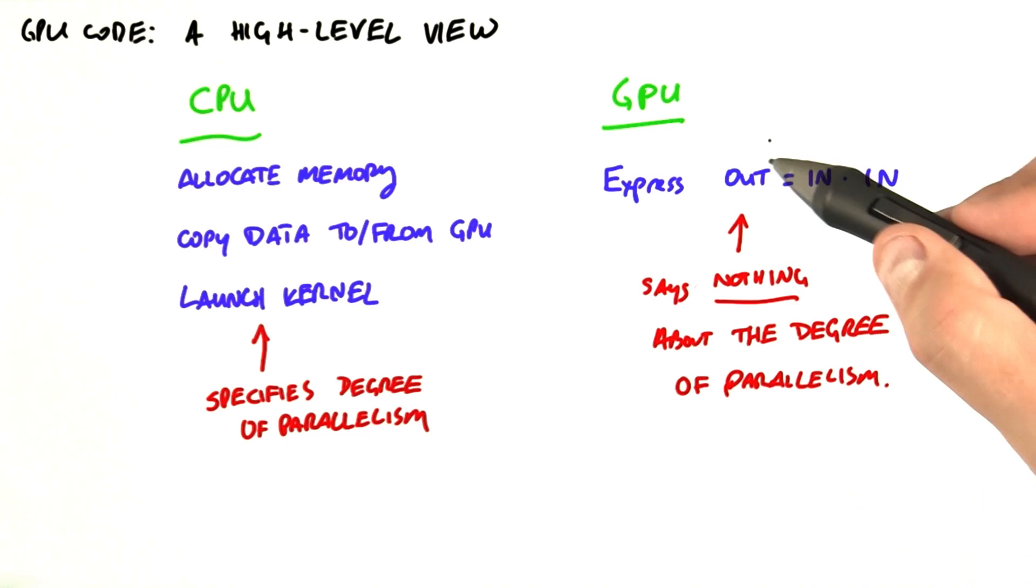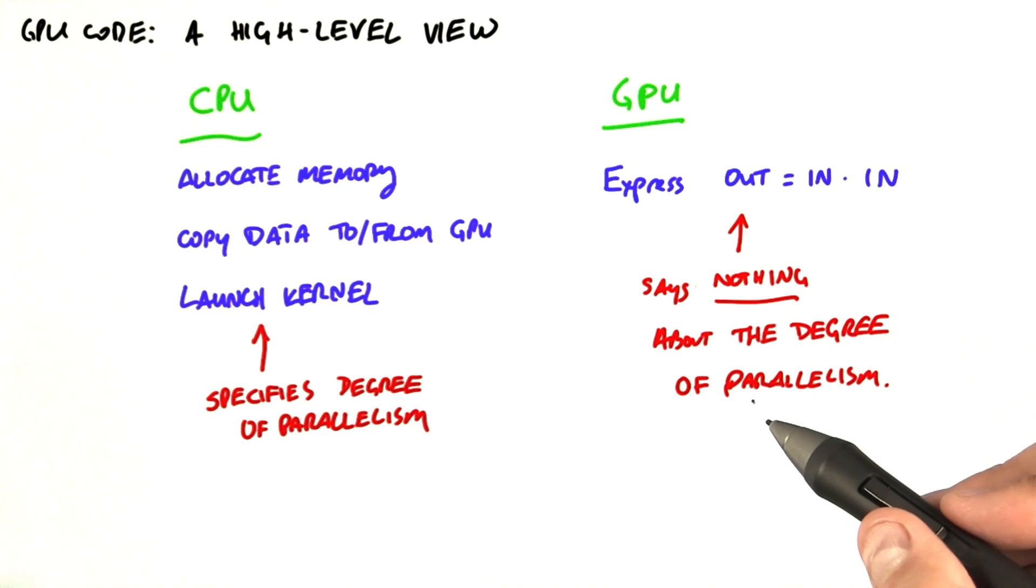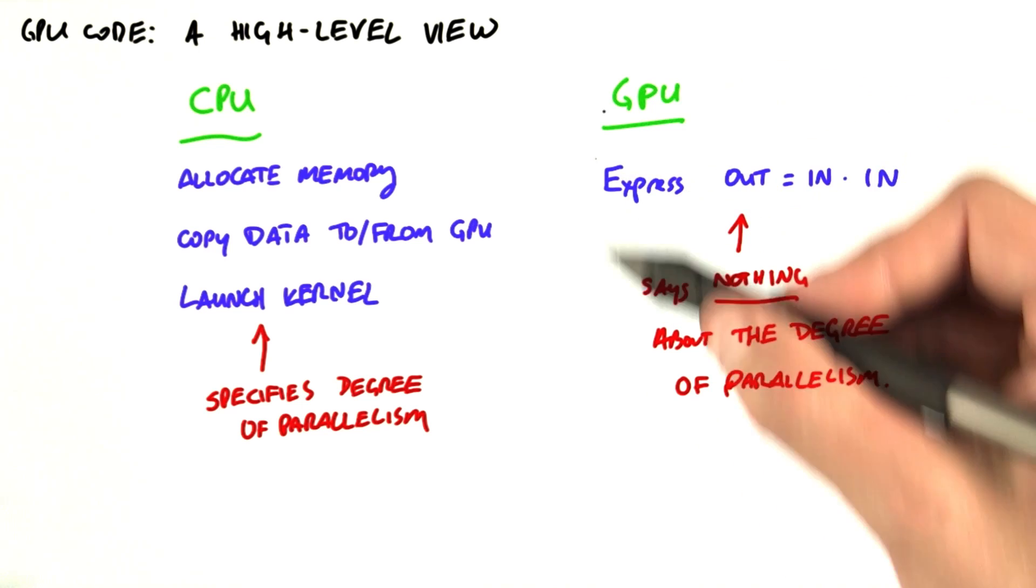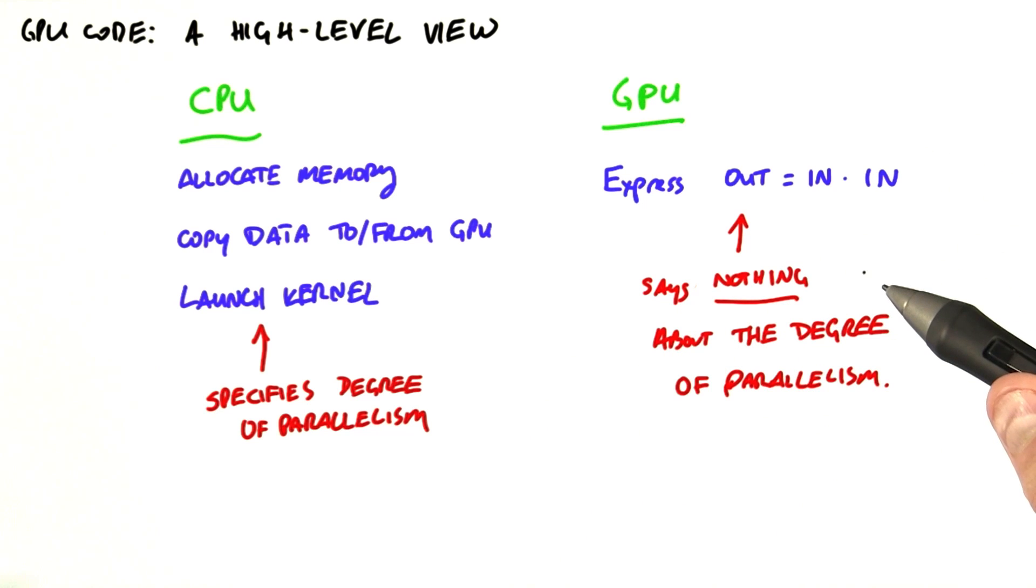Now, this kernel that we write for the GPU doesn't say anything about the level of parallelism. If you remember, kernels look like serial programs. So the idea of the fact we're going to do this 64 times is not expressed in the GPU program at all.